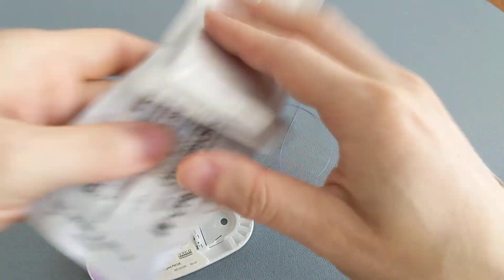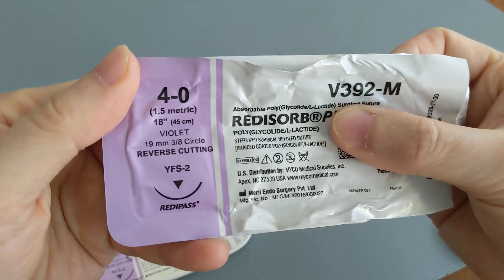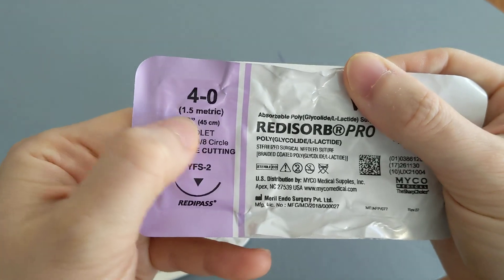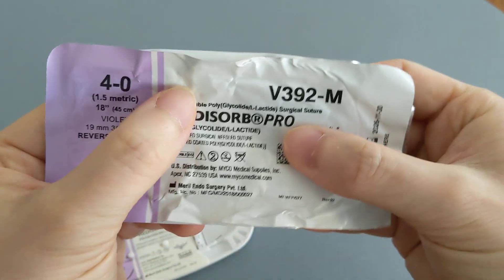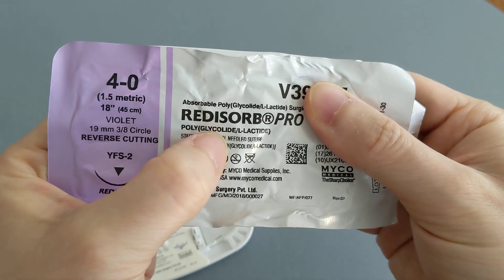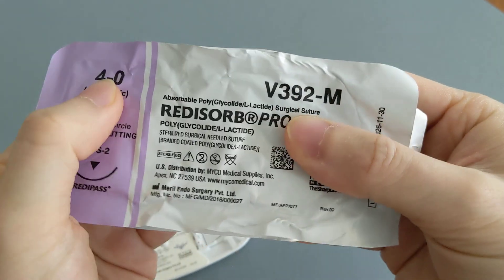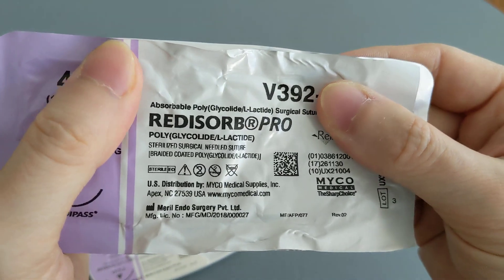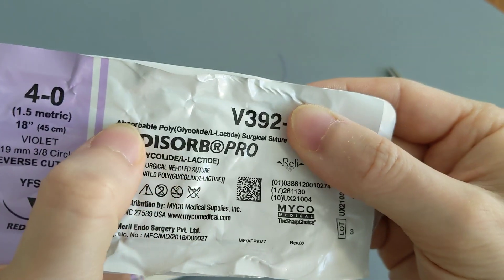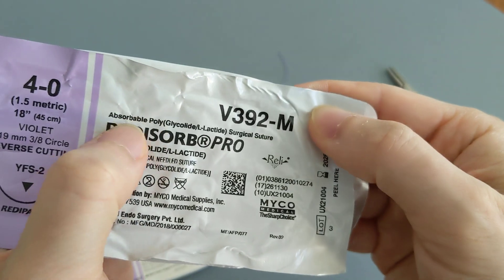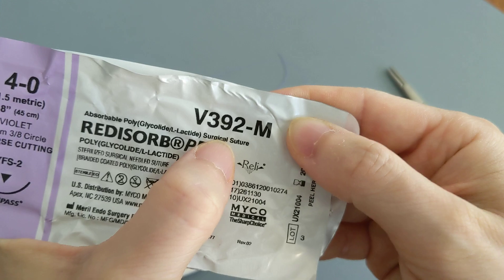All right, so let's see what it's made out of. Even on the packaging it says violet, and it is polyglycolide, so it's a PGA suture material and it is absorbable. Absorbable polyglycolide surgical suture.